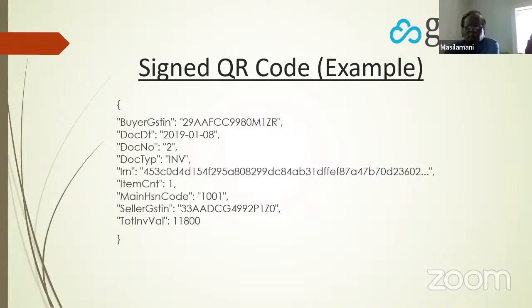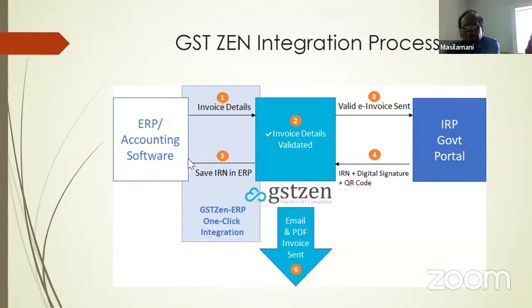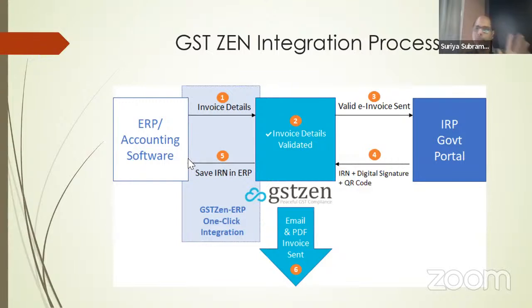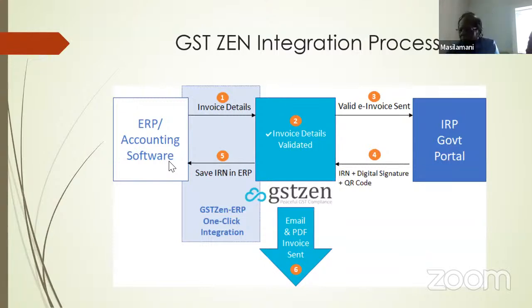Another question: currently we don't raise an e-way bill for invoices under 50,000 for a given distance — in future, does e-invoicing apply to even 1 rupee invoices? For e-invoicing, yes — even for a 1 rupee invoice you have to generate an e-invoice. E-way bill is not required for a 1 rupee invoice — e-way bill rules are not changed. So e-invoice and e-way bill are separate requirements.